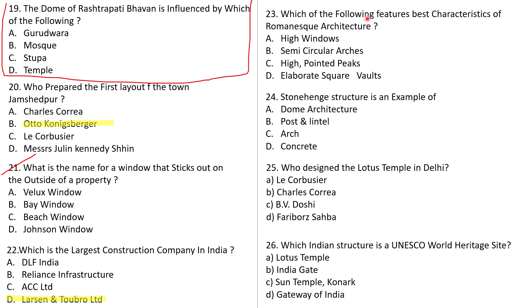Question number 23: Which of the following features best characterizes Romanesque architecture? Options: High windows, Semicircular arches, High pointed peaks, and Elaborate square walls. The correct answer is semicircular arches — that's the hallmark of Romanesque architecture. Question number 24: Stonehenge is an example of dome architecture, post and lintel, arch, or concrete? This is a very easy question — it is a post and lintel type of structure.